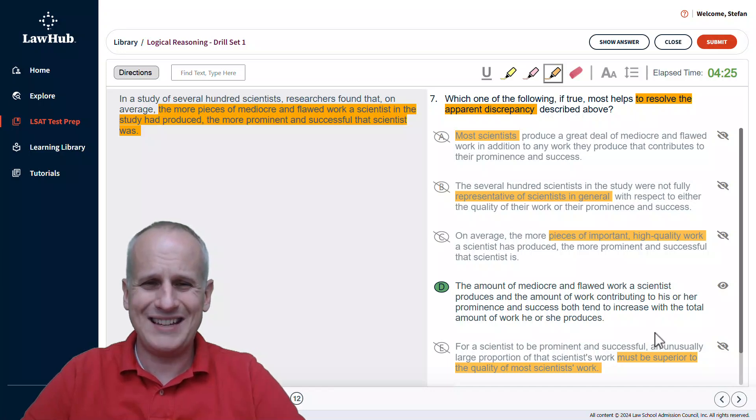Remember, for these type of paradox or resolve-a-discrepancy type questions, you can treat it just like a mini-argument with a conclusion that you're basically trying to explain. And when you are working through it, try to predict what that explanation might be like we did with this problem. And in the next video, we'll be moving on to question 8 and a different type of logical reasoning task.